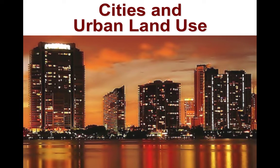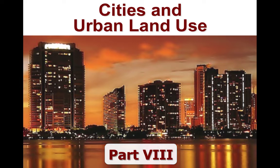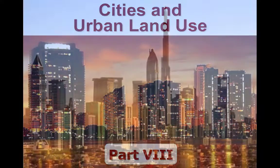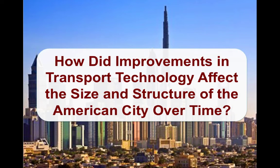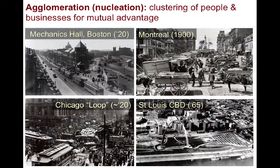Welcome to Cities and Urban Land Use Part 8. In this video we're going to look at the essential question: How did improvements in transport technology affect the size and structure of the American city over time? One of the key words to understand is agglomeration, also called urban nucleation, which is the clustering of people and businesses for mutual advantage.